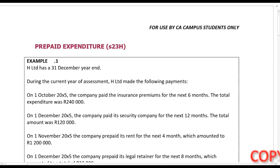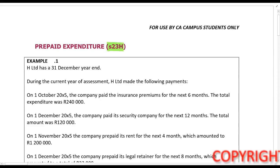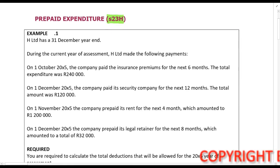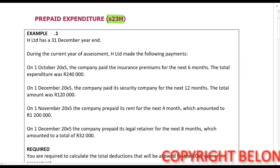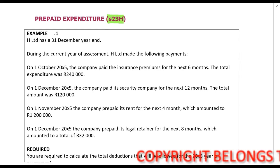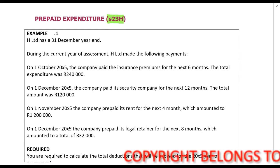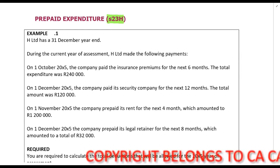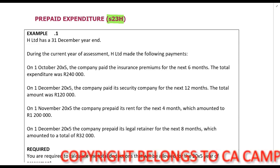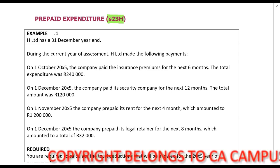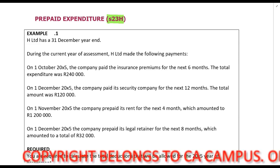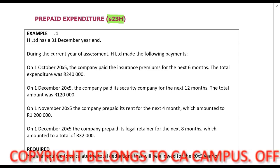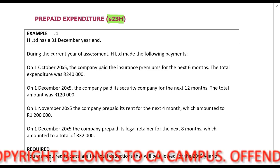In this lecture example we're going to look at Section 23H, the prepaid expenditure section. Remember it's very simple: you first identify the amounts which relate to the current year, then you identify everything which is prepaid for six months or less and you claim that, and then everything which is more than six months — add it up, and if the total is more than R100,000 you can't claim it.